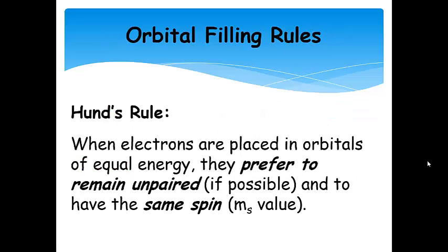Hund's rule is slightly different in that it's more of a guideline — like the Pirates of the Caribbean code. When electrons are placed in orbitals of equal energy (degenerate orbitals), they prefer to remain unpaired if possible and have the same spin. If you follow Hund's rule, that's lower energy. If you do break Hund's rule, it's an excited state but it is allowed. Following Hund's rule and filling from the lowest energy orbitals gives you the ground state.